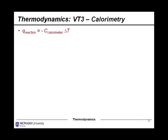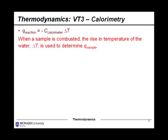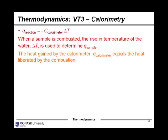With respect to calorimetry — and I'll work through a bomb calorimetry problem shortly — we can use this expression where the heat of a reaction Q equals the negative value of the heat capacity of the calorimeter multiplied by the change in temperature. When a sample is combusted in a bomb calorimeter, the rise in temperature of the water can be used to determine the overall heat of the sample. The heat gained by the calorimeter equals the heat liberated by the combustion reaction, so the heat gained equals the heat capacity multiplied by the change in temperature.